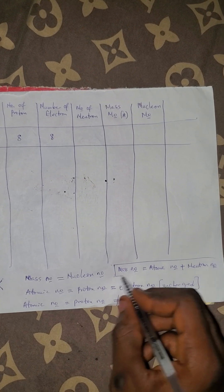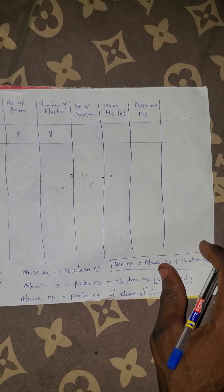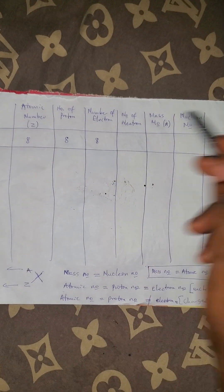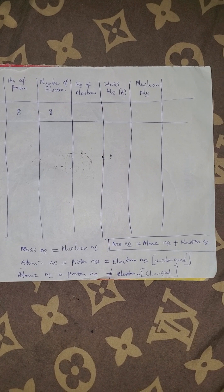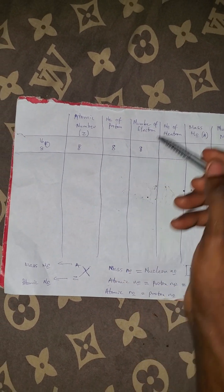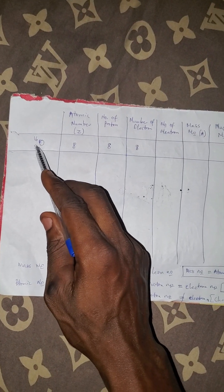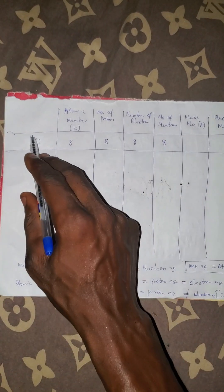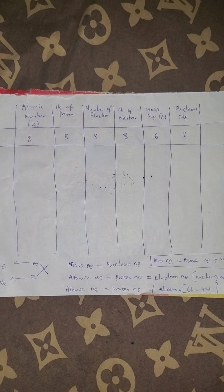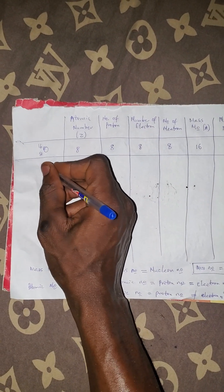So neutron number equals mass number minus atomic number. To get the neutron number here, we subtract the atomic number from the mass number: 16 minus 8 equals 8. Our mass number here is 16, and the nuclear number is also the same thing as mass number, so it is also 16.